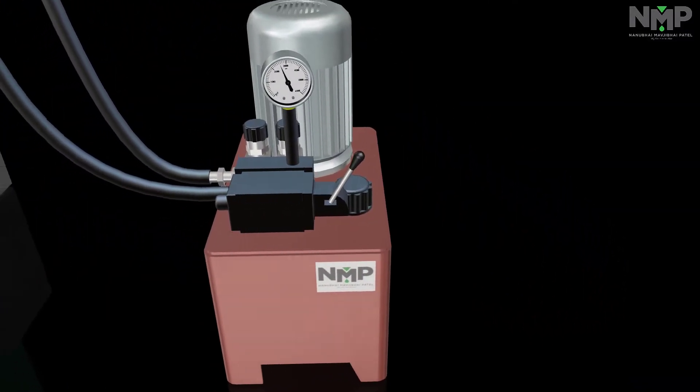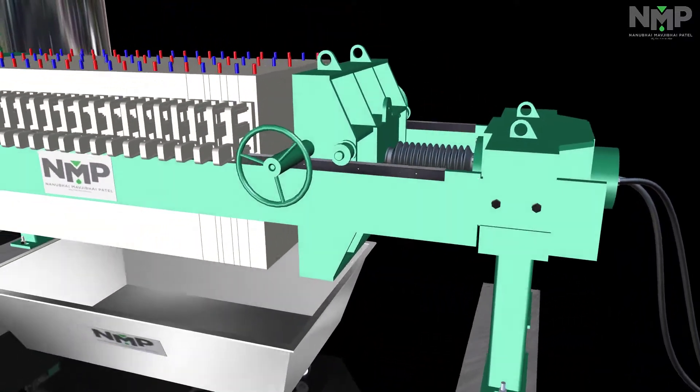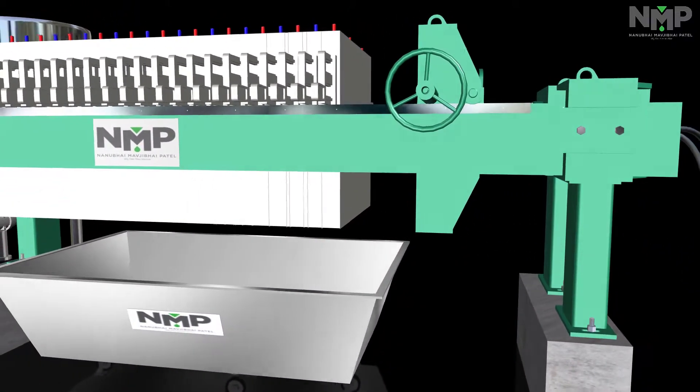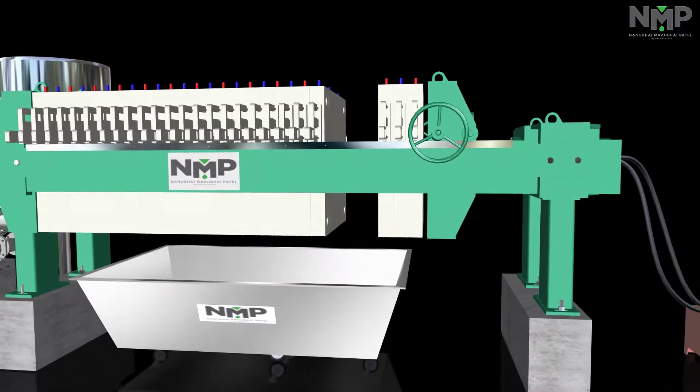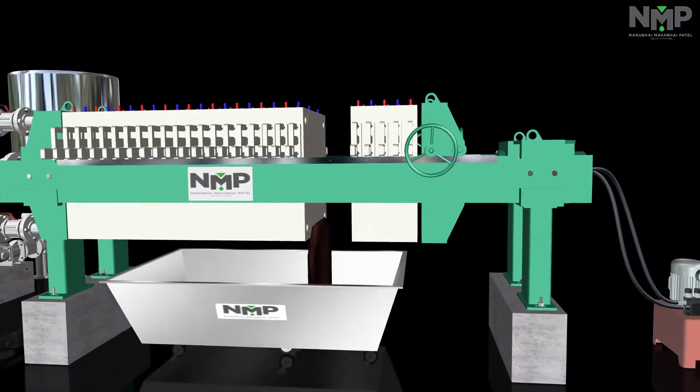Now switch on the motor and pull the lever of direction control valve in reverse direction. The cylinder will start moving to its initial position. When the cylinder reaches its final position, switch the motor off.